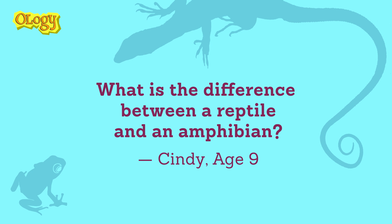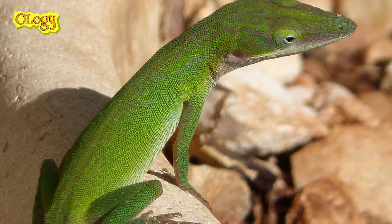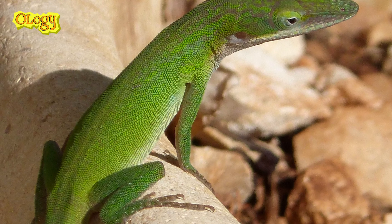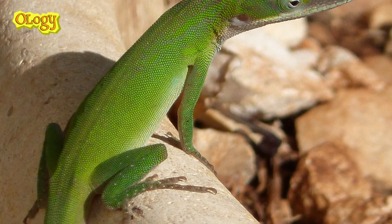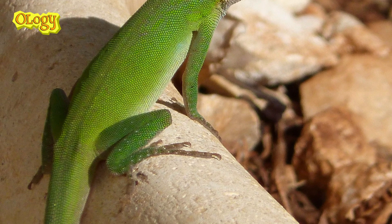What is the difference between a reptile and an amphibian? The difference between reptiles and amphibians is that reptiles have got scales and dry skin. They lay hard-shelled eggs, but they have a backbone.